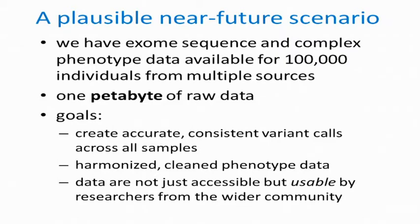Here we have the plausible near-future scenario I considered as I started to think about the challenges of aggregating sequence data from an informatics perspective. Let's imagine we have exome sequence data — it could easily be whole genome sequence data instead — and complex phenotype data, available for 100,000 individuals derived from multiple different sources. Currently that would comprise approximately a petabyte of raw data, which is a vast amount. At the moment, the vast majority of that data — in fact almost all of it — would be the raw sequence data. Phenotype data, while it takes much longer to collect and is much more difficult to do so, actually constitutes a very tiny fraction of the overall data possessed for these individuals.